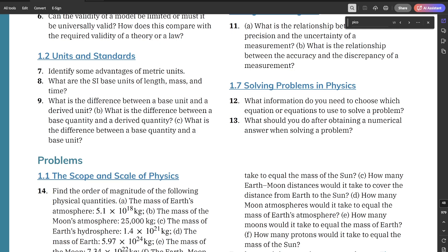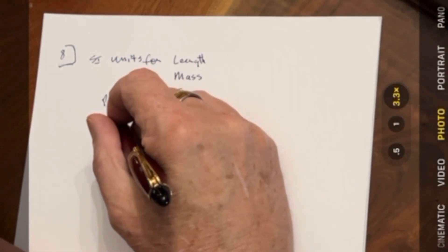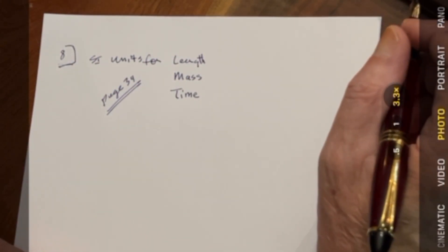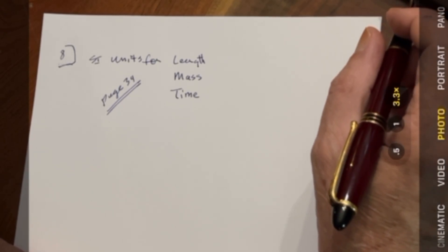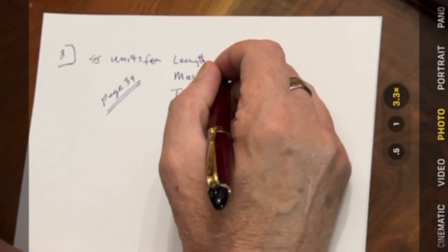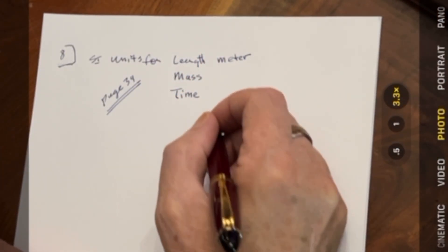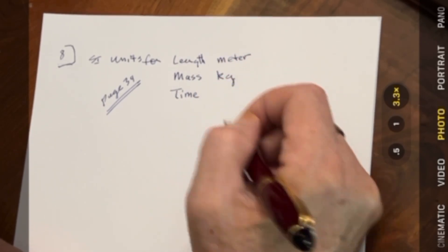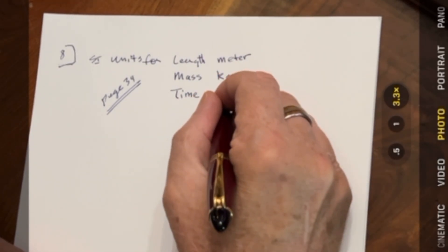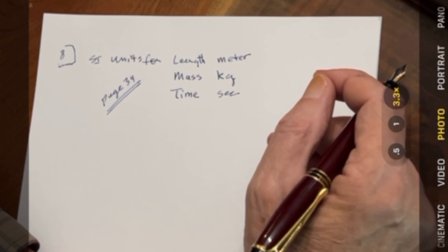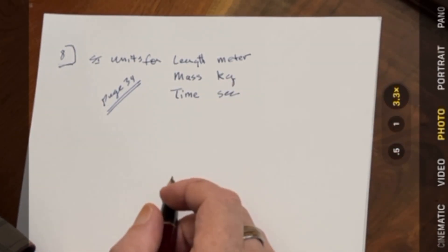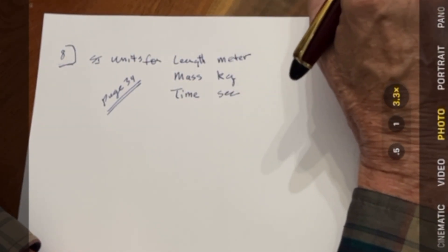What are the SI units of length, mass, and time? If you look back on page 34 of University Physics Part 1, you'll see that the unit of length is defined as a meter, a unit of mass is a kilogram, and a unit of time is a second. This is just one of those things you have to look up and know.